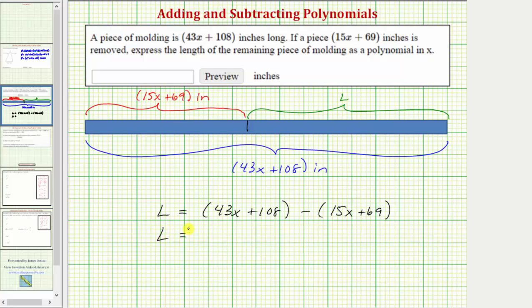So the length of L is equal to, let's clear the parentheses. So if it's helpful, we can think of distributing a one here. But because of the subtraction, we would distribute negative one here. Distributing one does not change the sign of either term. So we have 43x plus 108.